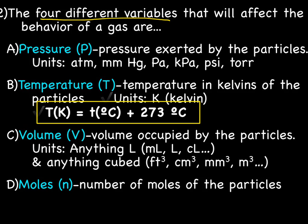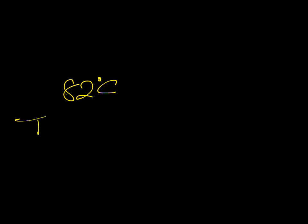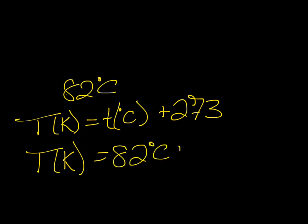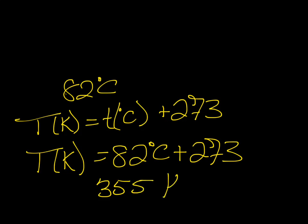Let's practice it right now. If I had 82 degrees Celsius and wanted to know what it was in Kelvin, we use: temperature in Kelvin equals temperature in Celsius plus 273. So temperature in Kelvin equals 82 plus 273, giving us 355 Kelvin. For Kelvin, we don't use a degree symbol — it's just 355 Kelvin.